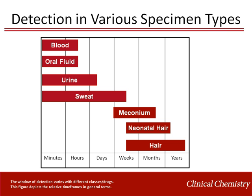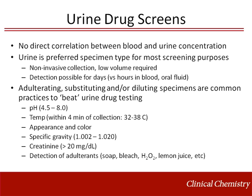This figure shows the relative detection window for various specimen types. Blood and oral fluids have the shortest detection windows and show the best correlation between concentration and signs of intoxication. The window of detection varies with different drugs and drug classes, but in general, urine drug screens detect substances for one to three days after exposure. Hair is an alternative matrix useful for detection of long-term exposure. Meconium is indicative of in utero drug exposure over the last 20 weeks of gestation. There is no direct correlation between blood and urine drug concentration or between urine concentration and signs of intoxication. Urine is the preferred specimen type for most screening purposes because it is noninvasive and generally has adequate collection volume.